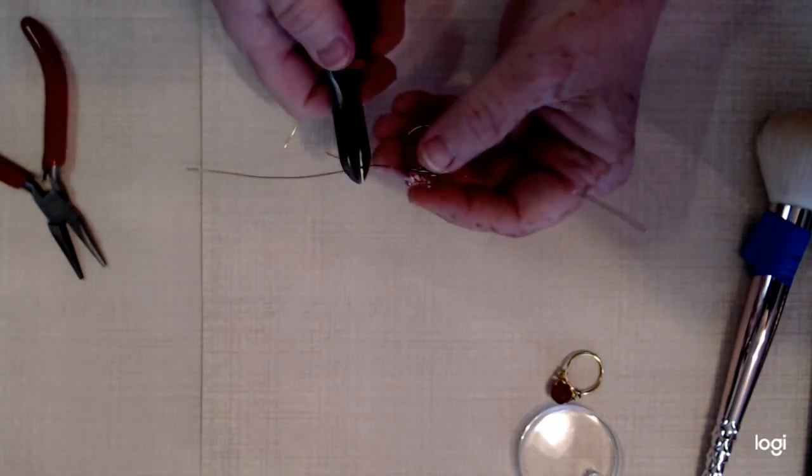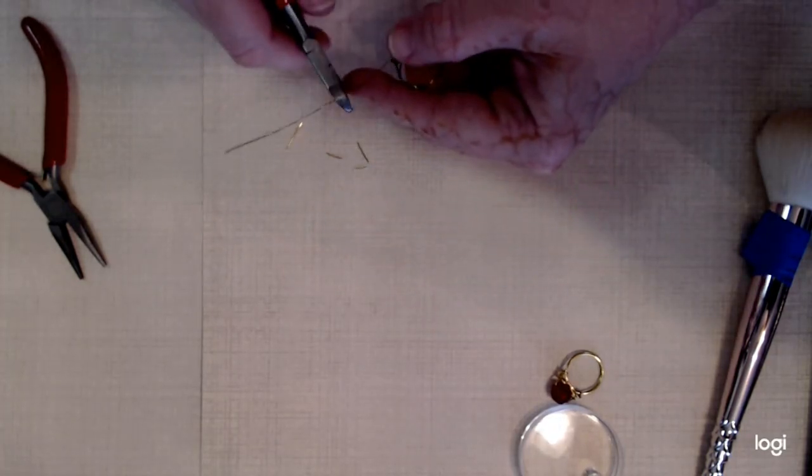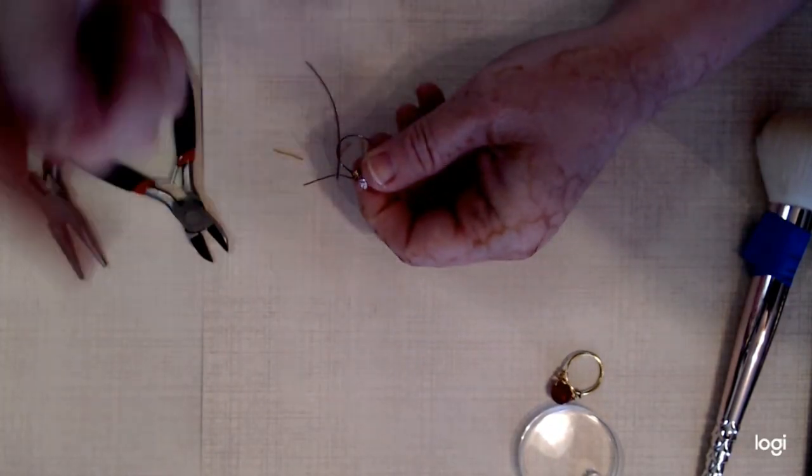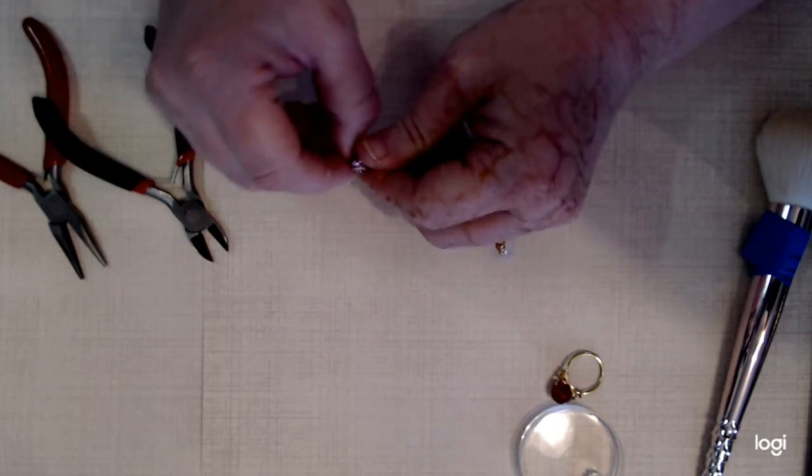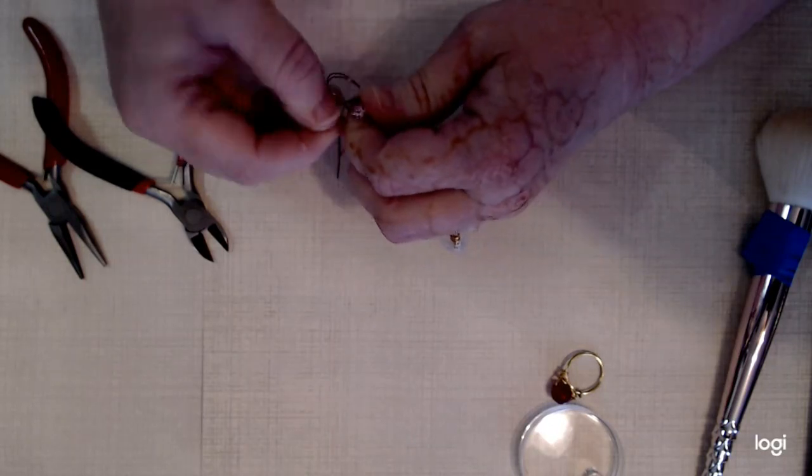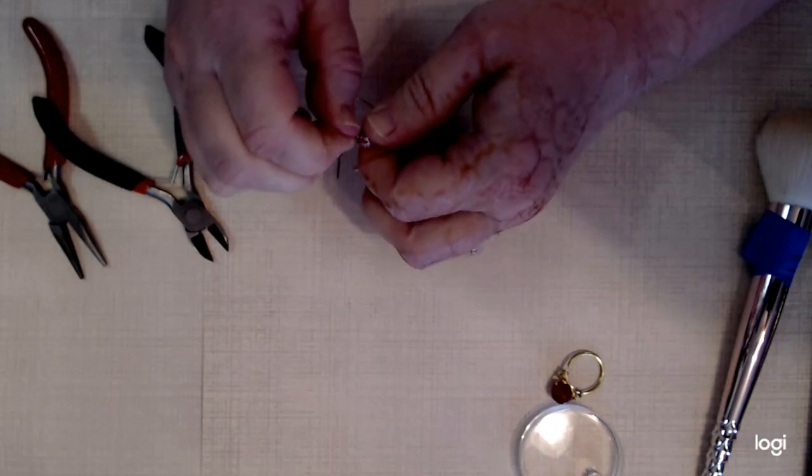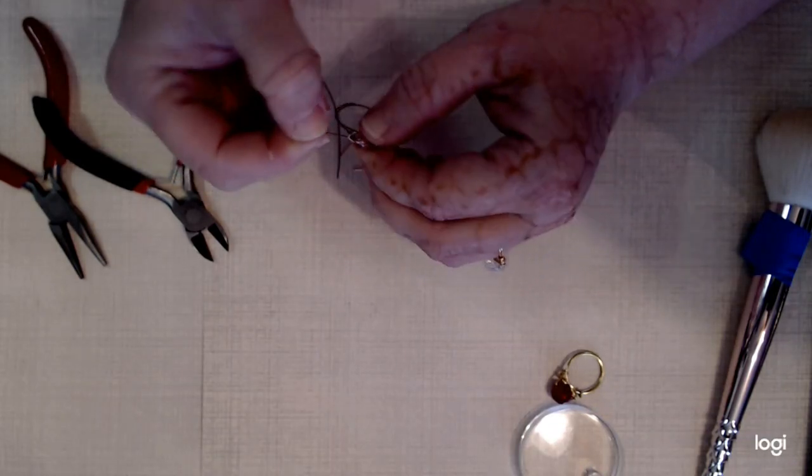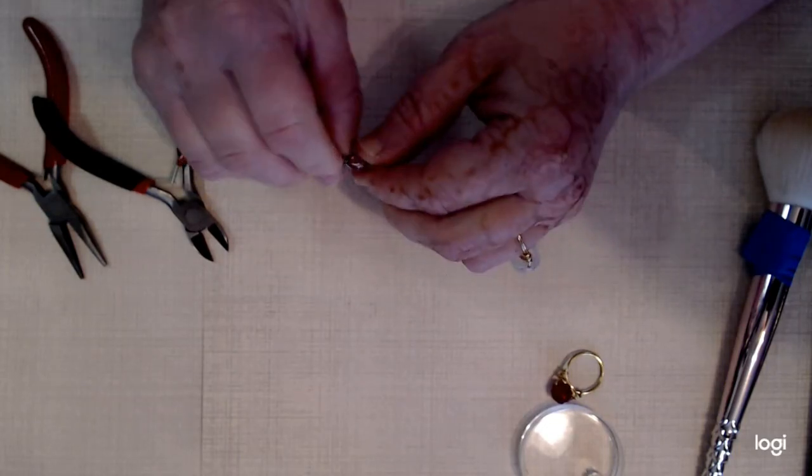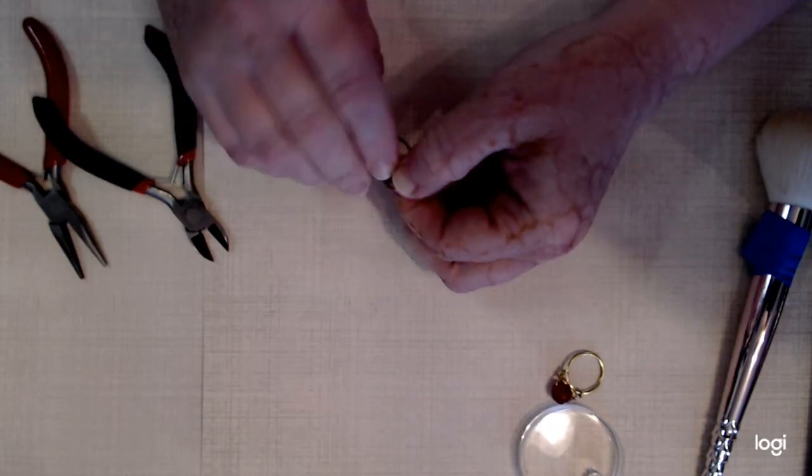I'm going to cut off about an inch to an inch and a half. Same thing on the other side. I'm going to wrap it through a few times. And because this is a tinier wire, this is 24 gauge, I'm going to wrap it three times. Two, three. And on this side. One, two, three.